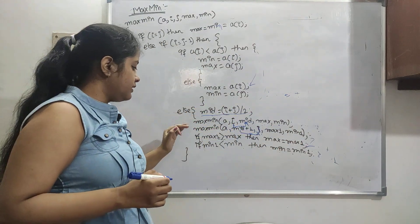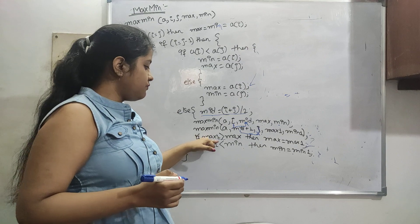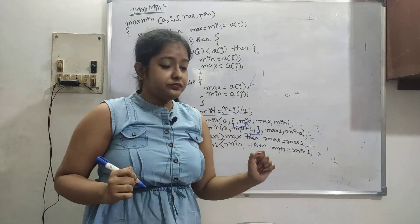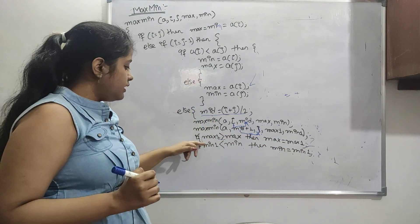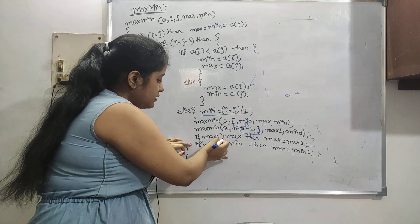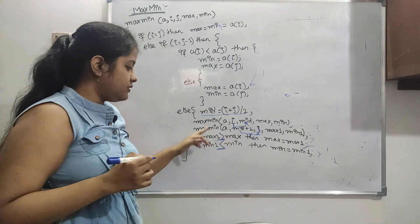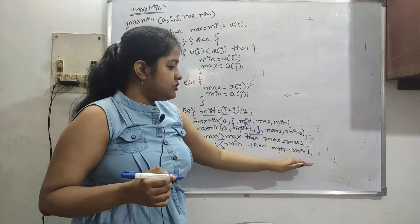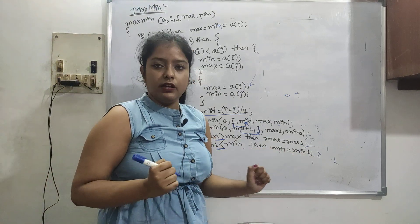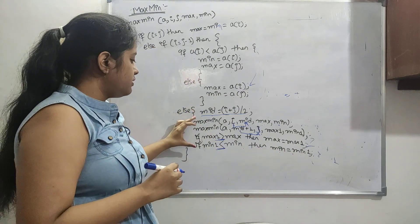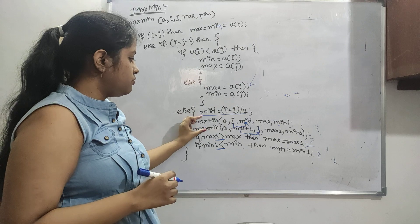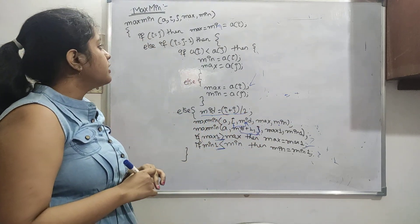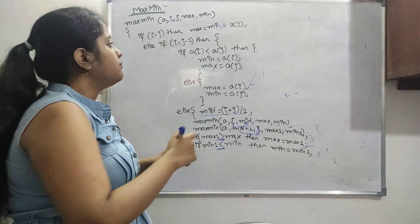The second recursive call runs from mid+1 to j. We then use two variables, max1 and min1. If max1 is greater than max, then max equals max1. If min1 is less than min, then min equals min1. These two parts are the recursive function calls.